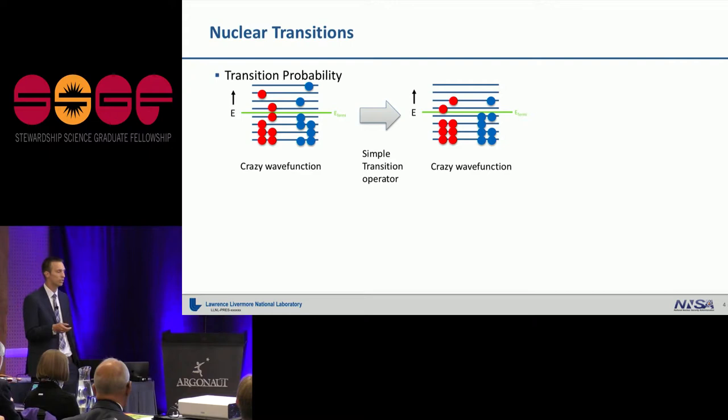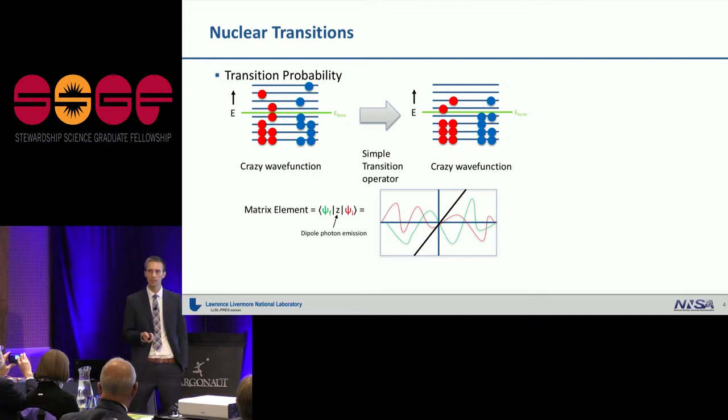Okay, so that covers excitations. Now what about transitions between those states? So you might have some crazy configuration of excited neutrons and protons within your nucleus. It decays to some other crazy configuration, maybe less crazy because it's lower in energy. And then there's a simple operator that connects these two states, typically photon emission. Now what governs this transition is what we call in quantum mechanics a matrix element.